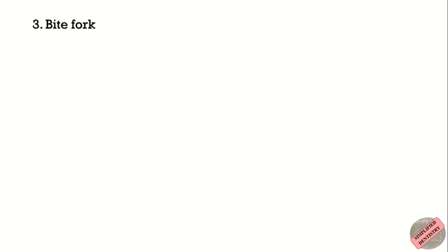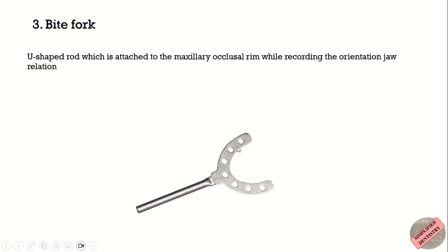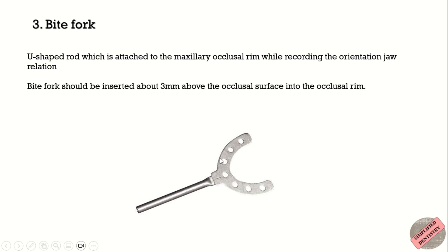The bite fork is a U-shaped rod which is attached to the maxillary occlusal rim while recording the orientation jaw relation. The bite fork should be inserted about 3 mm above the occlusal surface into the occlusal rim.